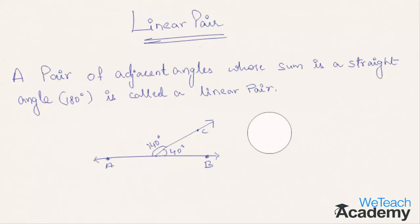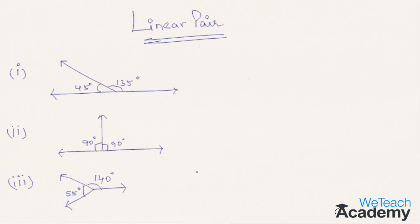Let us consider a few more examples and try to find which of these are linear pairs. Let us go with the first example. Here the sum of these angles is 135 plus 45 degrees which equals 180 degrees. Hence, we can say that this pair of angles is a linear pair since the sum of these angles is 180 degrees.